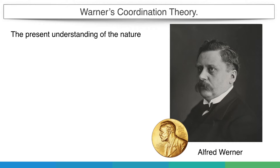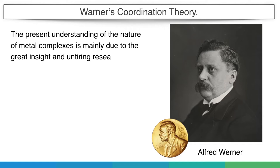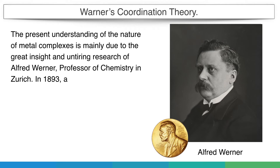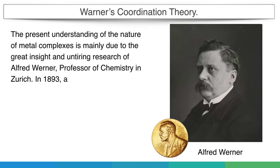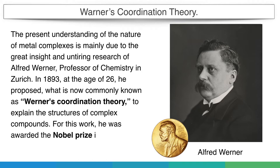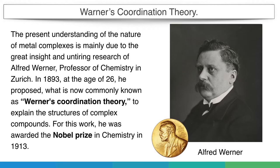Warner's Coordination Theory. The present understanding of the nature of metal complexes is mainly due to the great insight and untiring research of Alfred Warner, Professor of Chemistry in Zurich. In 1893, at the age of 26, he proposed what is now commonly known as Warner's Coordination Theory. For this work, he was awarded the Nobel Prize in Chemistry in 1913.